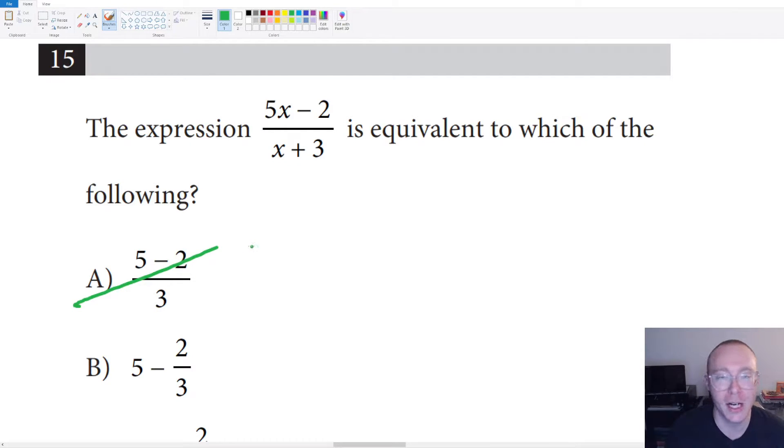It's trying to get you to make a common mistake. They kind of just cross out the X's and want you to assume that since you have an X over an X, you can just eliminate it and it doesn't exist. And you just have five minus two over three. So that is of course not how it works. You can't just erase X's,